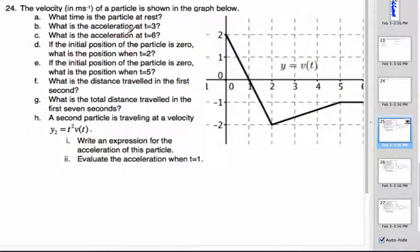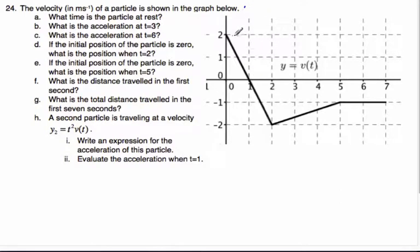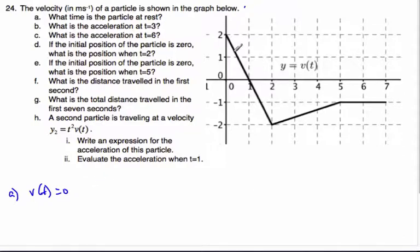In this case we have a velocity graph with a series of velocities shown as three lines. The first thing we want to find is when the particle is at rest. When the particle is at rest, the velocity equals zero. Looking at the velocity graph, at t equals one second, the velocity crosses the x-axis, so the particle is at rest there.